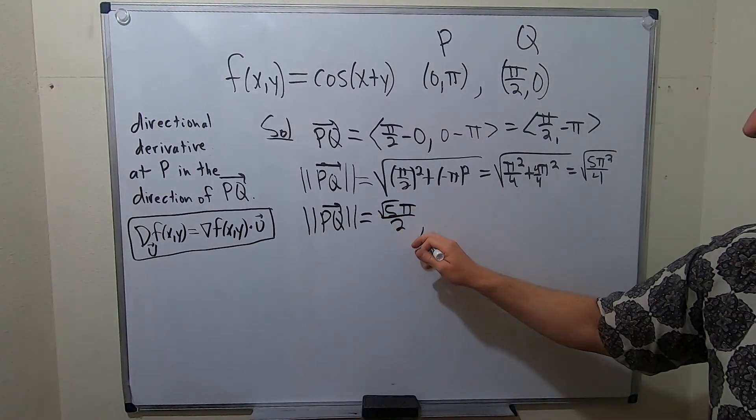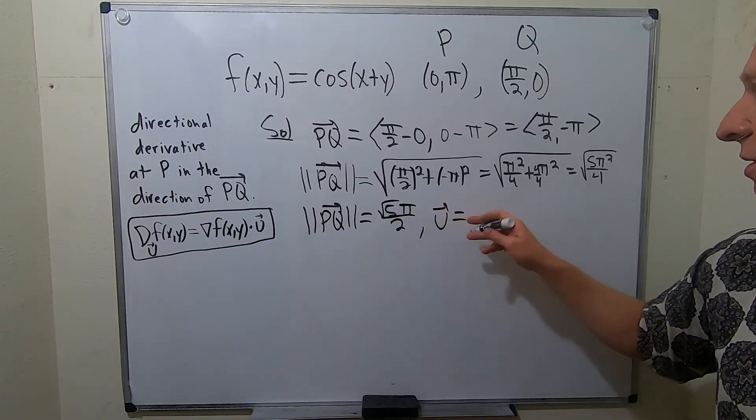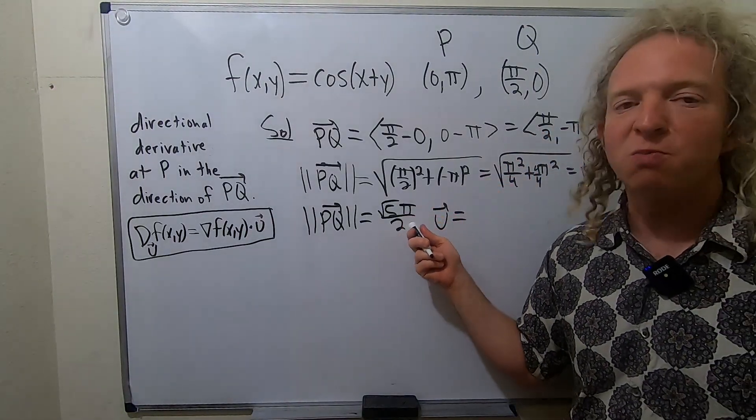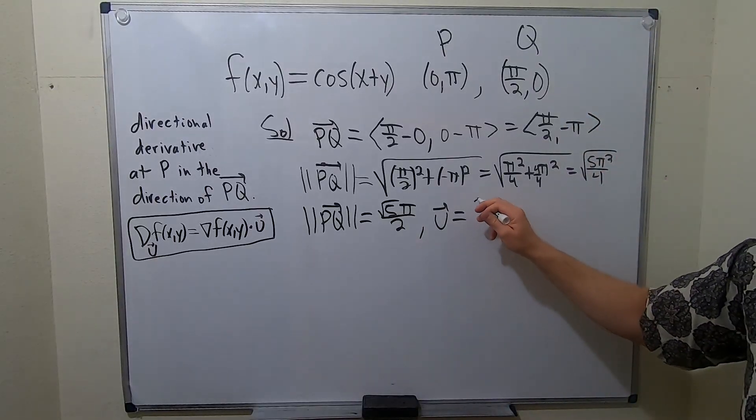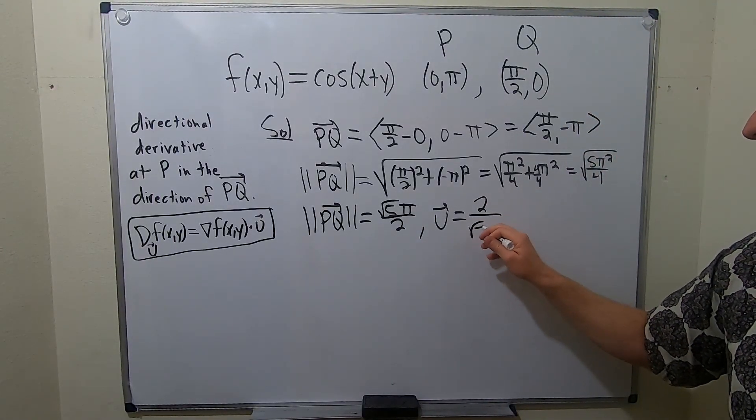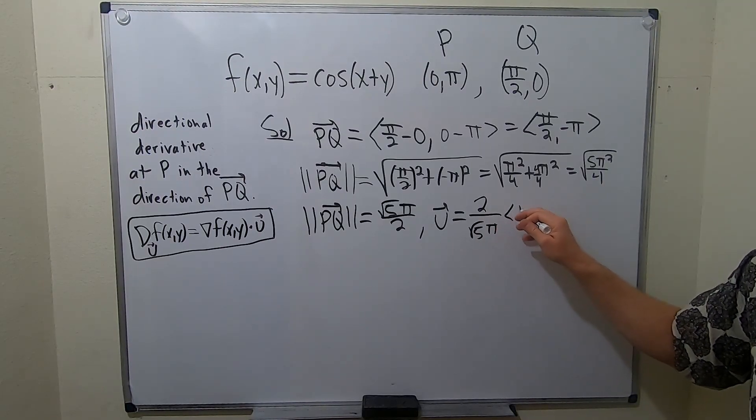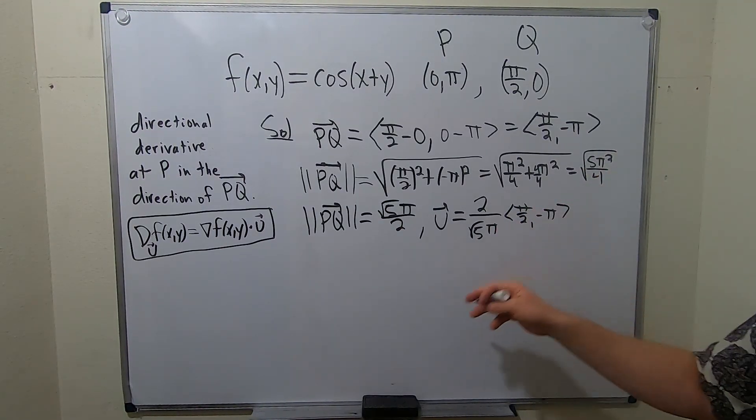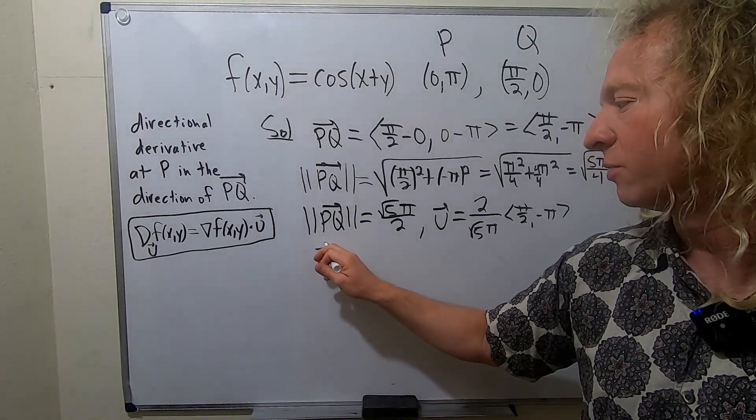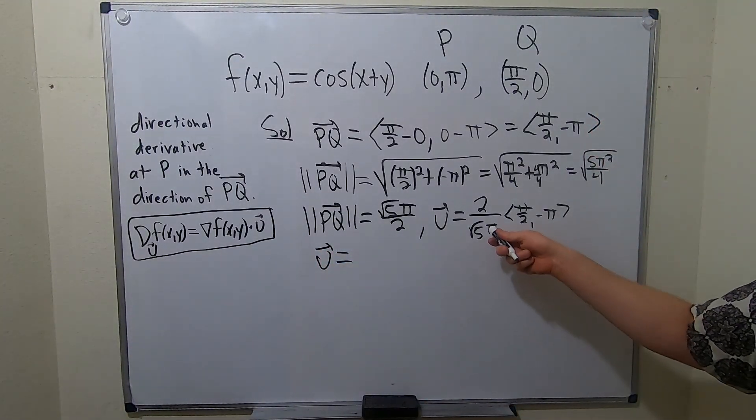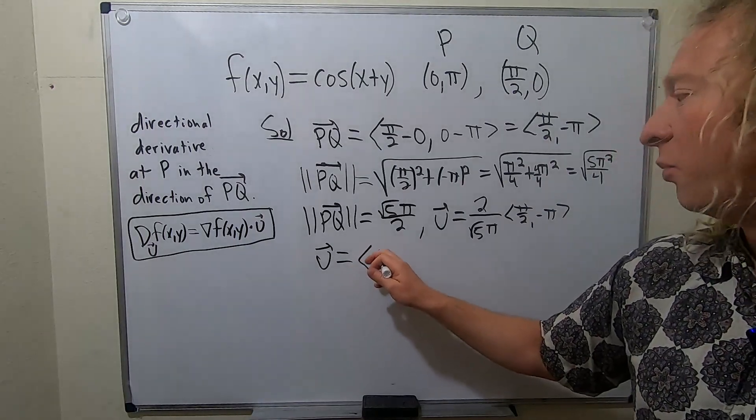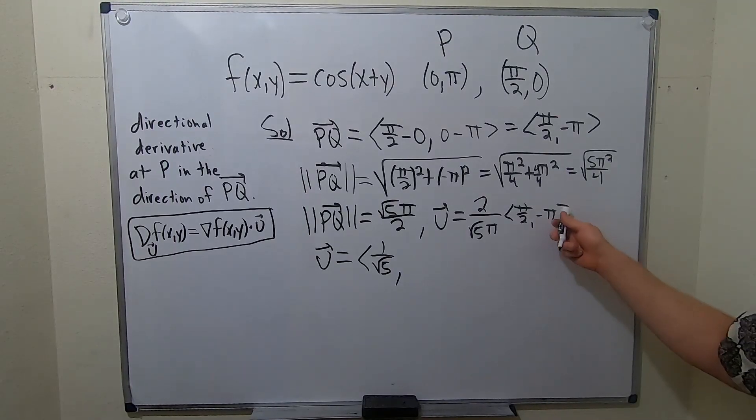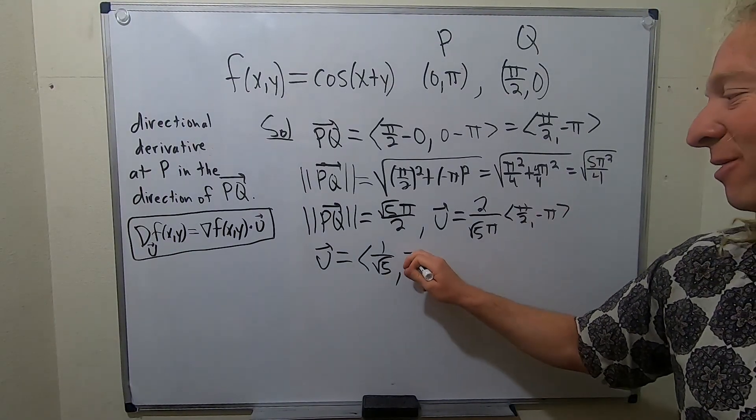Think of this as 4/4. This will be π²/4 plus 4π²/4, which is 5π²/4. So the magnitude of PQ is going to be - the π² will become a π, that will become a 2, so we'll get √5π/2. Our unit vector, we're going to take this vector and divide it by this. When you divide by this, you multiply by the reciprocal. So it's 2/√5π times (π/2, -π). Distributing and cleaning up, we have u equals - the π's cancel, the 2's cancel. We get 1/√5 and -2/√5.